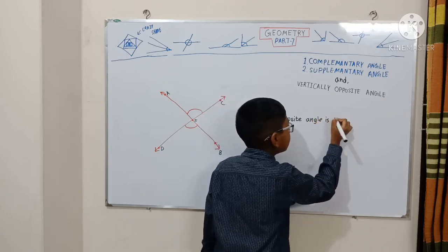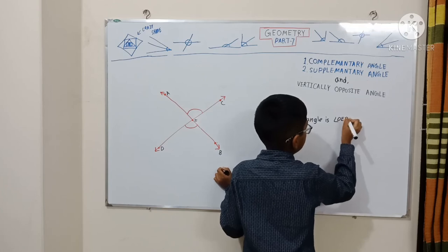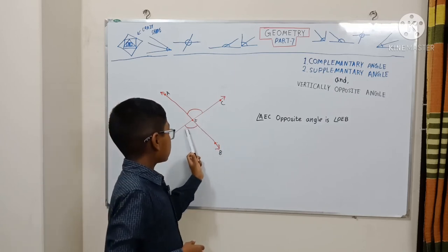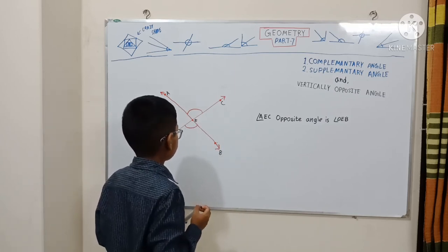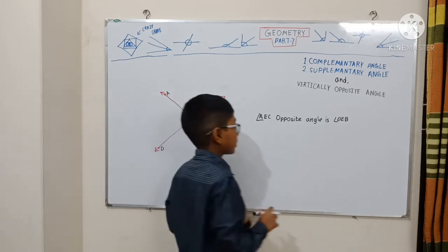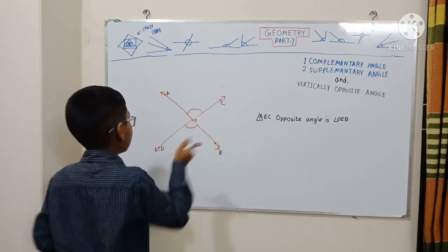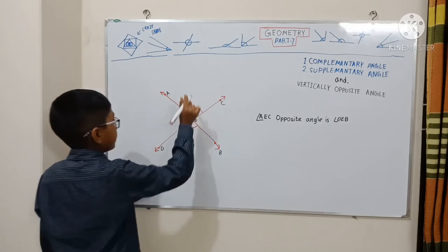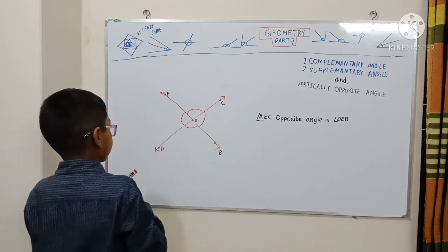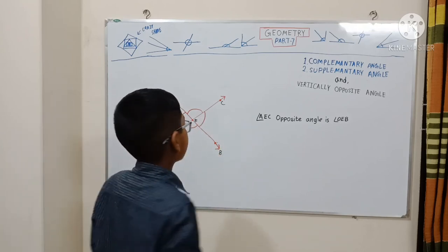Angle AE is opposite to angle DEB. The intersection's name is E, so remember this is also called the common vertex or the intersection — where the lines cross. Now, angle AED is also the same as these two. They point in opposite straight-angle directions: left opposite is right.